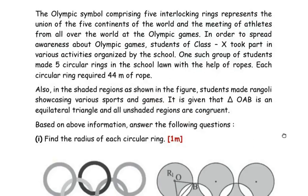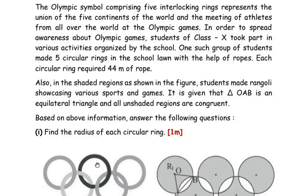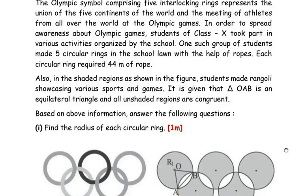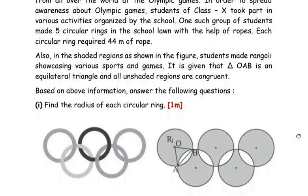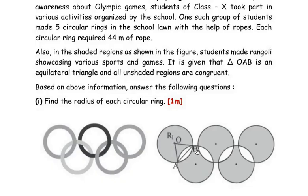The Olympic symbol comprising five interlocking rings represents the union of the five continents of the world and the meeting of athletes from all over the world at the Olympic Games. To spread awareness about the Olympic Games, students of class 10 took part in various activities organized by the school. One such group of students made five circular rings in the school lawn with the help of ropes. Each circular ring required 44 meters of rope. In the shaded regions shown in the figure, students made rangoli showcasing various sports and games. Triangle OAB is an equilateral triangle and all of the unshaded regions are congruent.